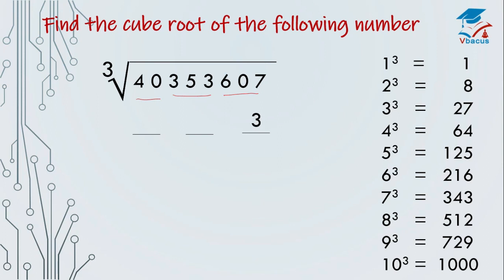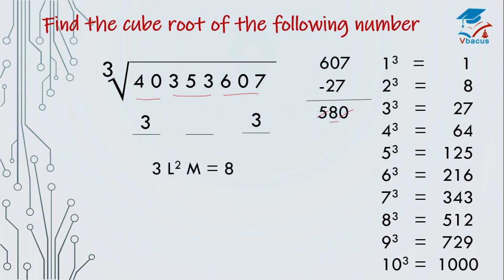Now we have to find the hundreds digit. Where does 40 lie? 40 lies in between 27 and 64 — choose the lowest number. Cube root of 27 is 3, so 3 will come at the hundreds digit. Now we have to find the middle digit. Subtract the cube of 3 from 607 — the answer is 580. Consider the 10th digit; forget the remaining digits. Apply in the formula.